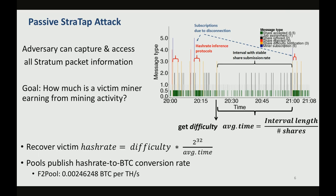Most pools actually publish this hash rate to BTC conversion rate for transparency purposes. This shouldn't be very surprising, because the pool is obtaining exactly the same information that the attacker is using. So if the pool is able to do it, why shouldn't the attacker?